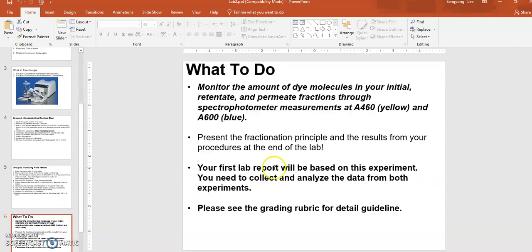At the end, you'll have fractions collected: initial material, permeate fractions, and retentate left in the tank. Assay those using spectrophotometer measurement at A460 (detects yellow dye) and A600 (detects blue dextran blue dye). Use plastic cuvettes and prepare a blank cuvette with nanopure water. Measure absorbance of your fractions.